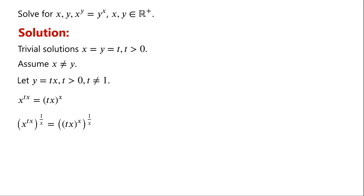Take the x-th root on both sides of the equation. We know that (a^m)^n equals a^(mn). By applying the power of a power rule, we have x to the power of tx times 1/x equals (tx) to the power of x times 1/x. Since x times 1/x equals 1, we have x to the power of t equals tx.